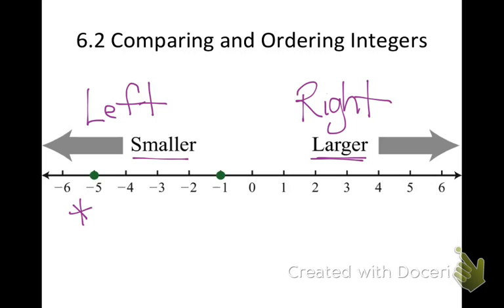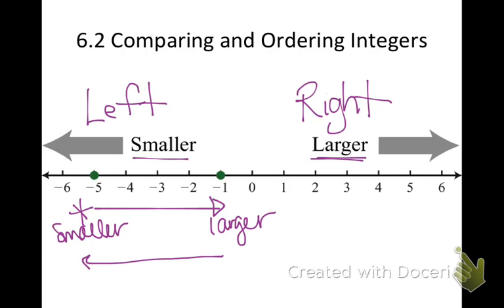So if you start and move to the right, your number gets larger. If you start and move to the left, your number gets smaller. If I start at negative 5 and I go to negative 1, that number is larger, and negative 5 is a smaller number. Numbers further to the right are larger, and numbers further to the left are smaller.